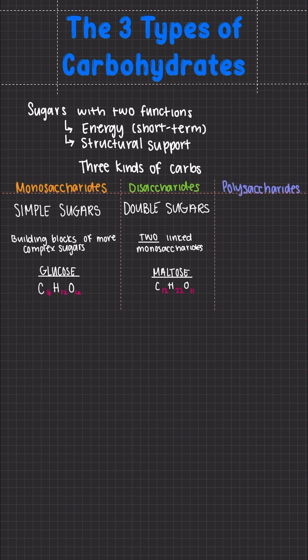And then we have our polysaccharides. These are our complex sugars made up of 10 or more linked monosaccharides, and examples include starch, glycogen, and cellulose.